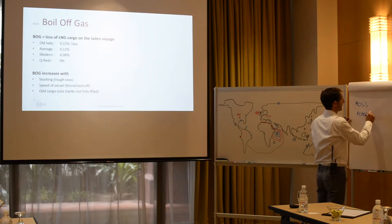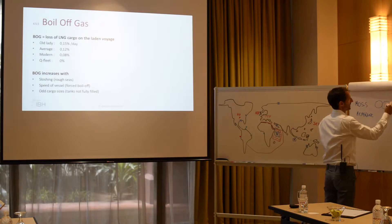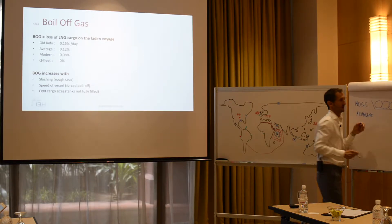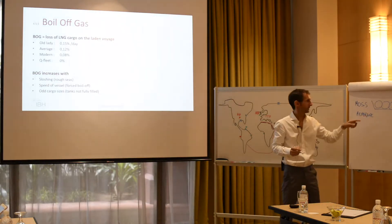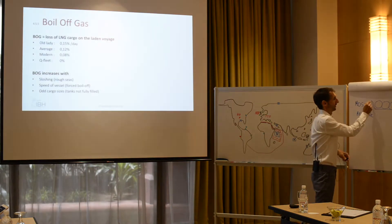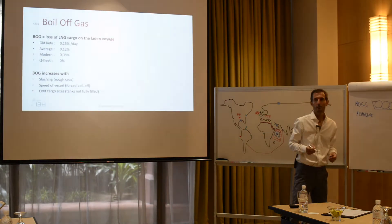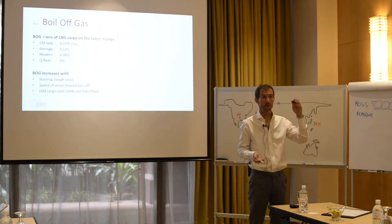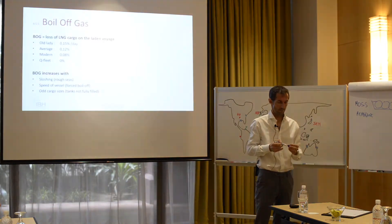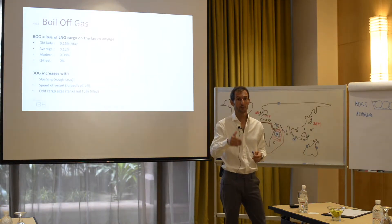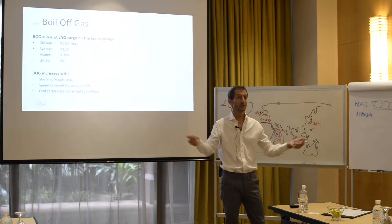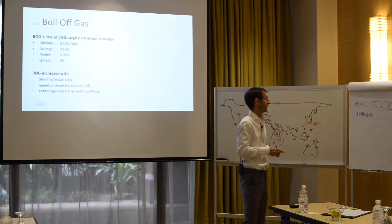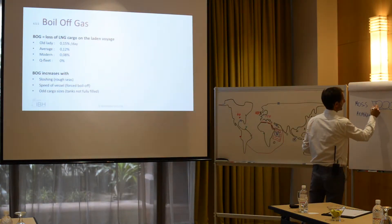A Moss vessel — you put spheres inside the ship. If you do this, you see that you waste a lot of space, so the ship is bigger, higher. In some ports it cannot enter because it's too big or they cannot moor it, but there is not a lot of sloshing.